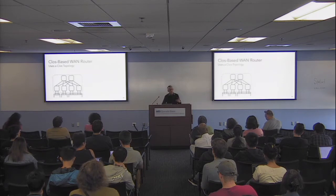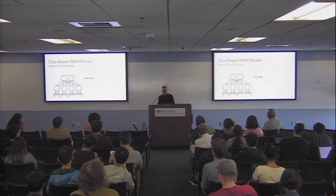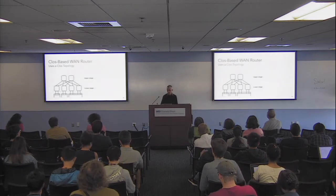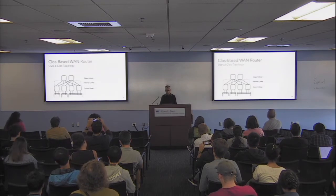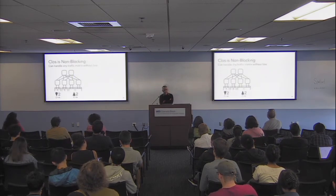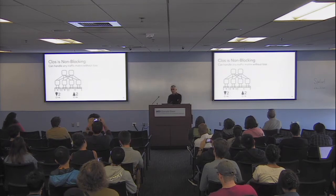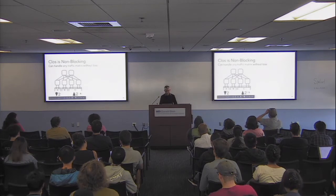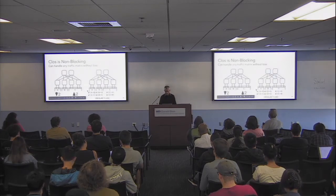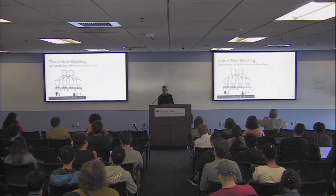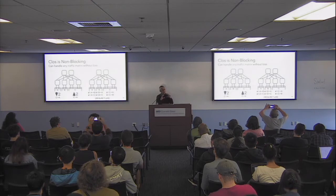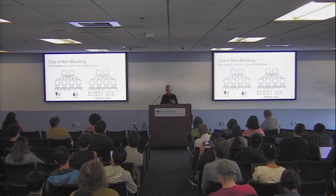They use a topology called the Clos topology. It has switches in the upper stage, switches in the lower stage, and internal links. The defining property of the Clos is that it's non-blocking: if I throw any traffic at it — for example, sending two units of traffic between C and A — you're guaranteed that no matter what traffic volume you send, the Clos topology can handle it.